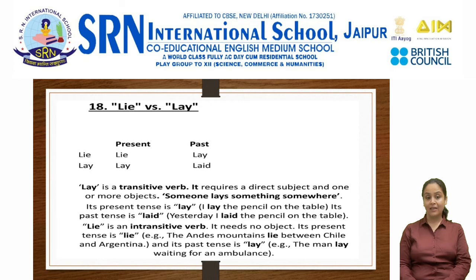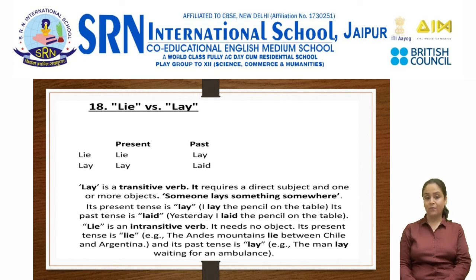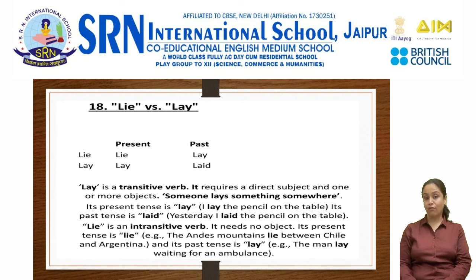Lie versus lay. Lay is a transitive verb — it requires a direct subject and one or more objects. Someone lays something somewhere. Its present tense is lay: I lay the pencil on the table. Its past tense is laid (L-A-I-D): yesterday I laid the pencil on the table. Lie (L-I-E) is an intransitive verb — it needs no object. Its present tense is lie. Example: the Andes mountains lie between Chile and Argentina. Its past tense is lay: the man lay waiting for an ambulance.